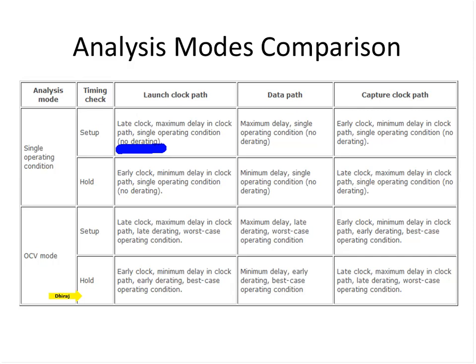For hold, the situation reverses: the data path must be fast, so it takes the early clock and minimum delay. The capture clock path takes late clock and maximum delay. In a very simple design where launch and capture clock paths are identical and data path has only one path, there will be very little difference between setup and hold delay calculations, because there is virtually no difference between late and early clock in that case.